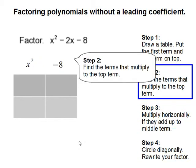Step 2. Find the terms that multiply to the top term. So this is where we're going to do some guess and check. We know that x times x gets us x squared. So I'm going to put x in x.